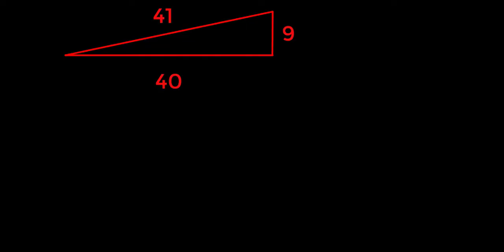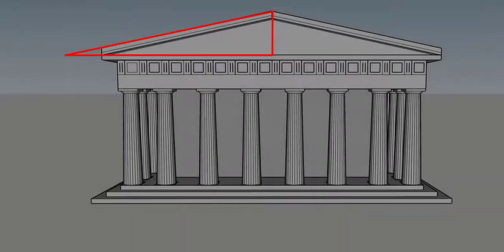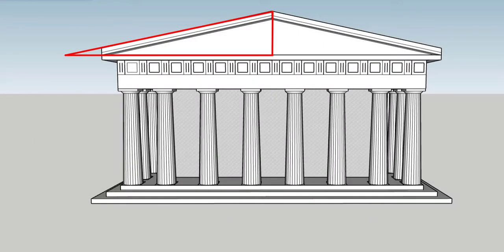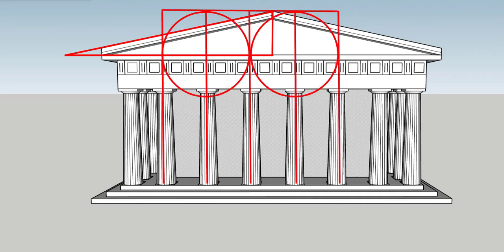So let's explore a different hypothesis, that one of the governing principles was that the pediment's angle of slope should come from a Pythagorean triangle. This triangle then also governs the distance between the columns in a simple way, because this intercolumnar distance is equal to the height of the pediment, that 9-unit distance.